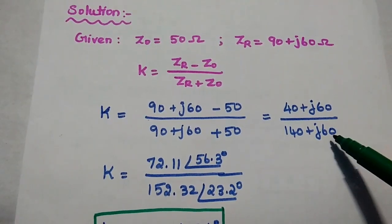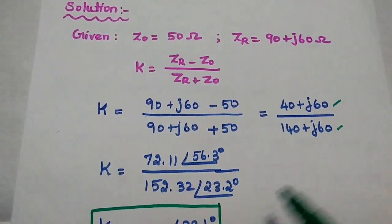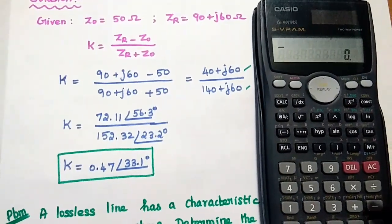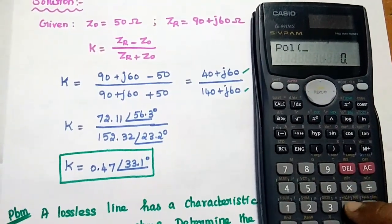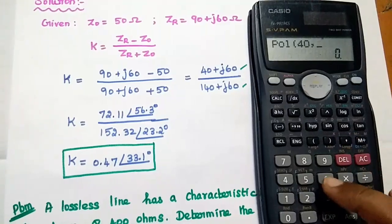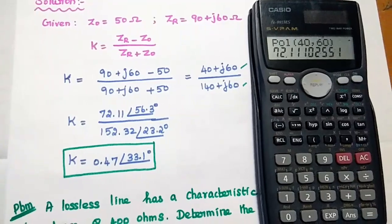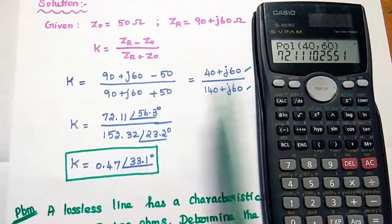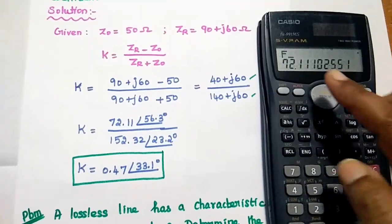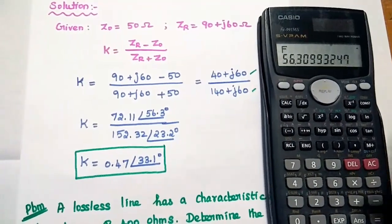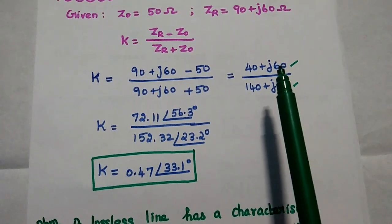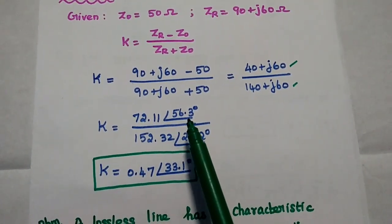We cannot divide using rectangular form, so we convert to polar form using the calculator by pressing Shift then the plus sign, entering the real term 40 and imaginary term 60. This gives a magnitude of 72.11. Pressing Alpha and tan gives the angle 56.3 degrees. So the numerator in polar form is 72.11 at angle 56.3 degrees. For the denominator 140 plus j60, the polar form is 152.32 at angle 23.2 degrees.